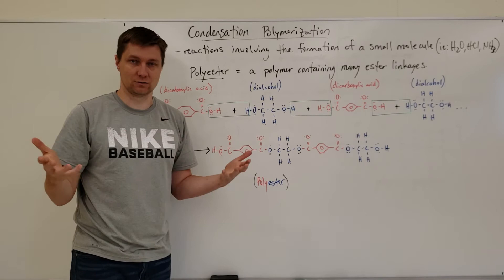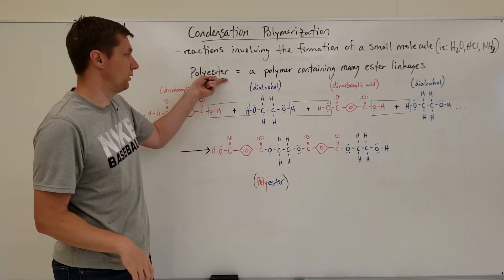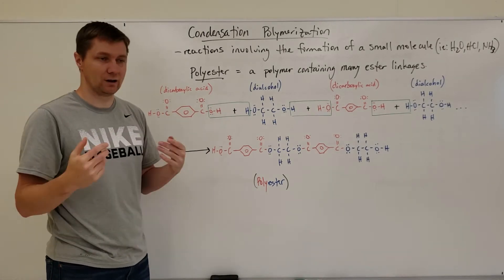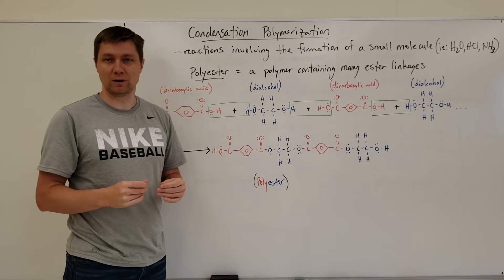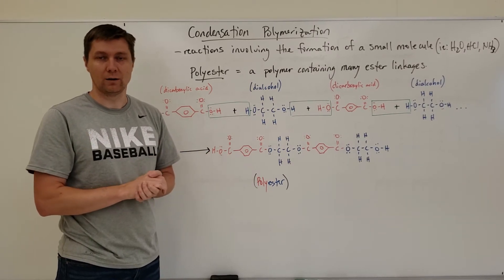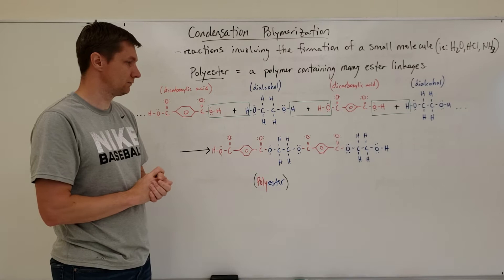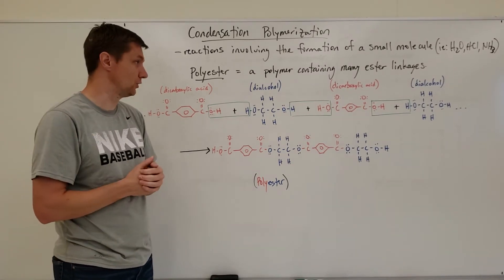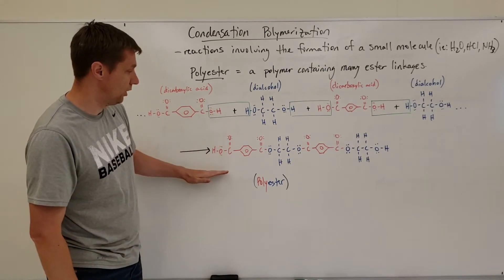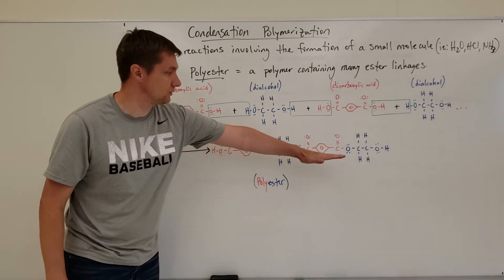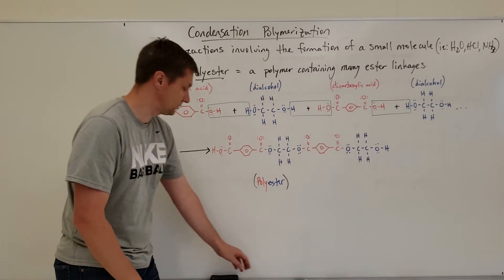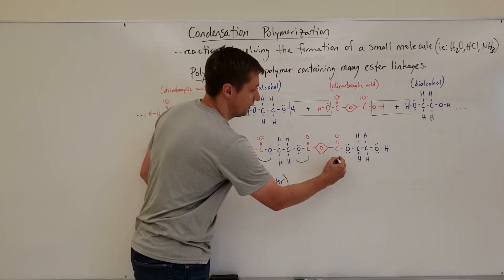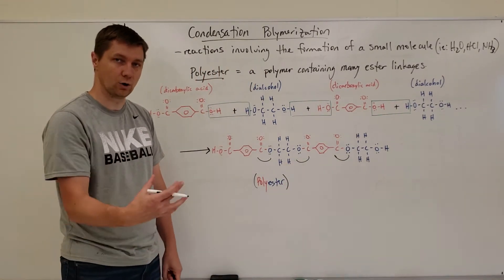So you get these ester linkages that happen all the way down. If we have many ester linkages in this molecule then we just call it a polyester. And you've all heard of what polyester is before. It's just a synthetic material that's oftentimes made in the lab used for making clothing and things like that or other types of wear that you might have. Down here is the molecule that has all these ester linkages in them. You can see here's an ester linkage right here and an ester linkage right here and an ester linkage right there. That's COO group.